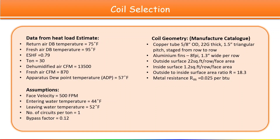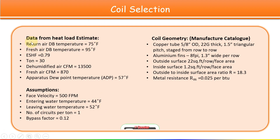Welcome back to the new lecture. In this lecture we are going to discuss the calculation for coil selection. Before starting the calculation in the Excel sheet, here is the data we need — it comes from the heat load calculation. For the selection of coil, we need the return air dry bulb temperature, the fresh air dry bulb temperature value.